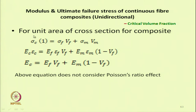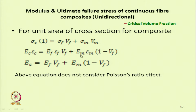For unit cross-sectional area of the composite, stress on composite equals stress on fibre plus stress on matrix. If the volume fraction of matrix is Vm, the equation becomes: stress in composite equals stress in fibre multiplied by volume fraction of fibre, plus stress in matrix multiplied by volume fraction of matrix. Similarly, modulus of composite is obtained by multiplying the individual fibre modulus with the volume fraction of fibre and modulus of matrix with the volume fraction of matrix, which is 1 minus volume fraction of fibre.